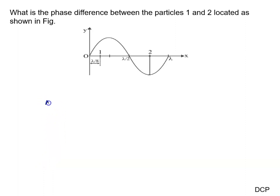So we calculate the distance between 1 and 2. Delta x equals lambda by 2 minus lambda by 8 plus lambda by 4. We will solve it.